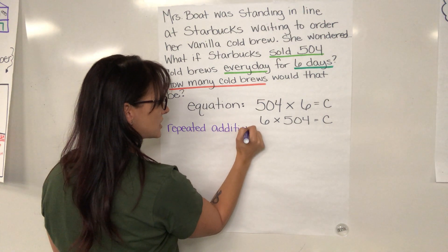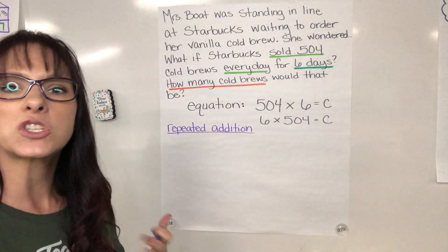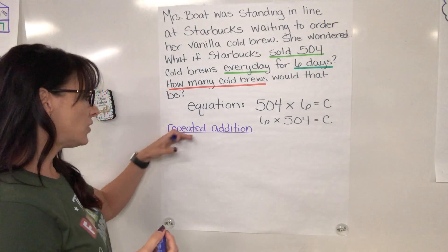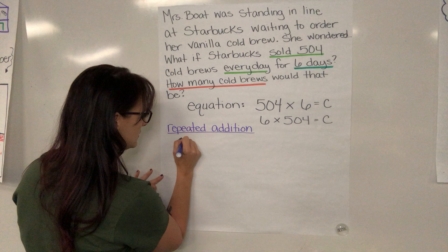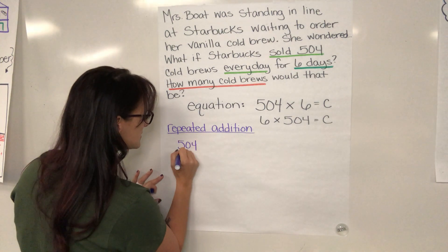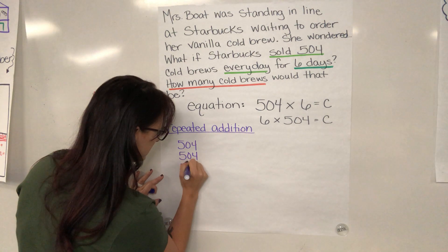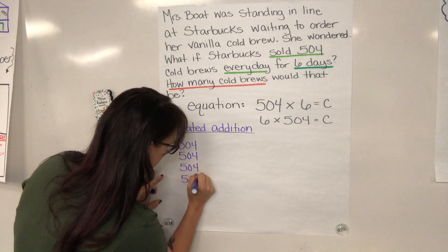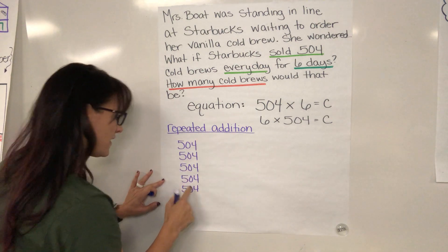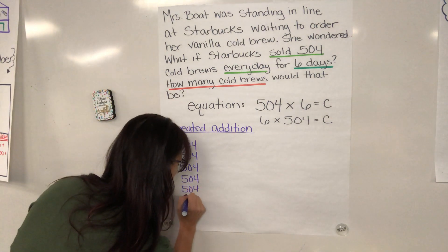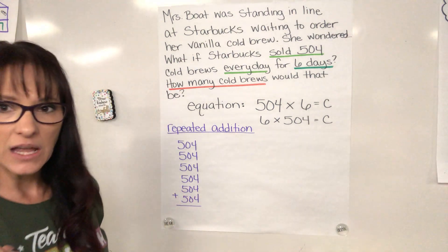One way that many of you probably approach this is with repeated addition. Now with repeated addition, it could look a couple different ways. So I'm going to show you the two most common ways. You know that there are six of them, so you could have simply done 504 six times. And you could have added it that way.